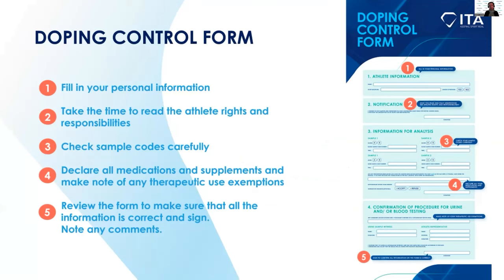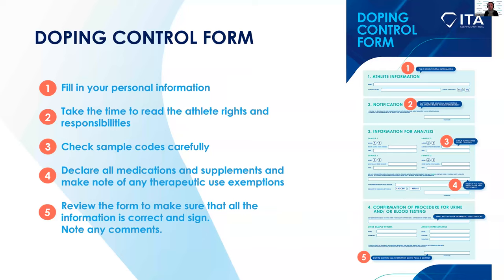As you saw in the video, the doping control form is a key document in the sample collection process. It is a legal document that can be used in court. It holds the athlete's personal information, information used for lab analysis, information about medications taken and therapeutic use exemptions, and the athlete's signature. It also contains information about the notification process, any partial samples, whether the athlete was accompanied, and any other comments. It is essential that athletes double and triple check everything on the form, as once signed it becomes a confirmation that everything is accurate. Athletes are encouraged to check sample codes multiple times to ensure there are no mistakes.